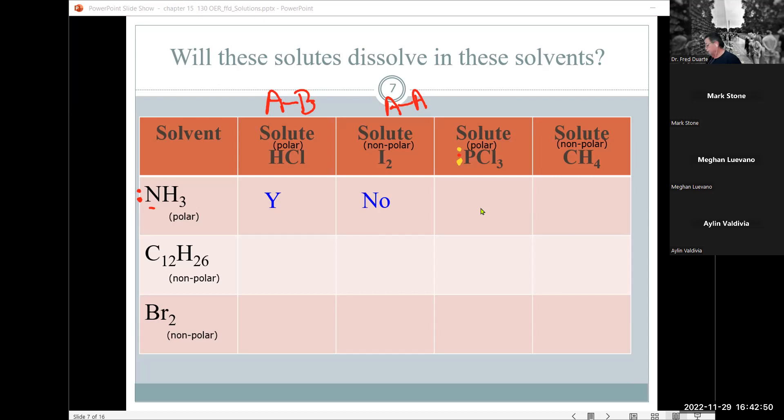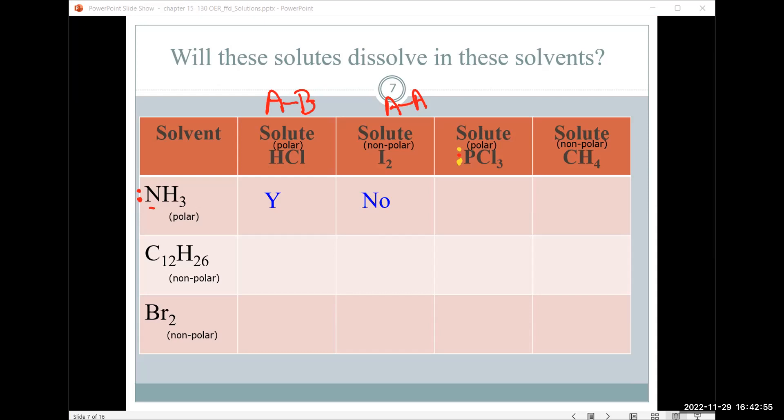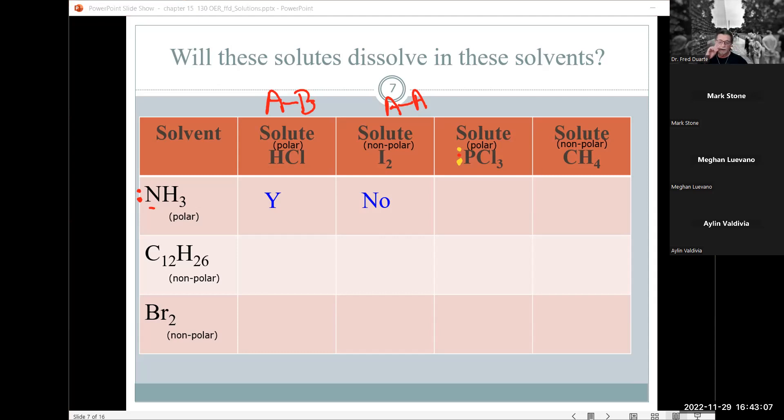Because, excuse me one second, my dog was doing something. Bear with me. Okay. All right. So we have a difference of polarity, and nonpolar versus a polar, they would not mix. The next example of phosphorus trichloride and ammonia, yes, they will mix because they're both polar. And no for the last example with methane. No for the hydrocarbon and HCl because the differences in polarity, but yes with iodine. And no with PCl3 because polar versus nonpolar, but yes with methane.